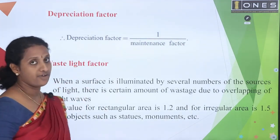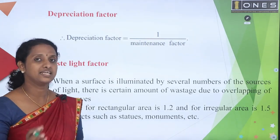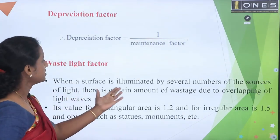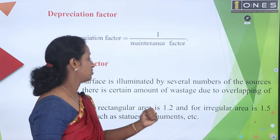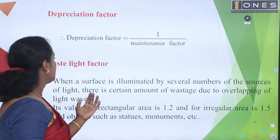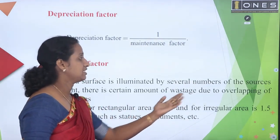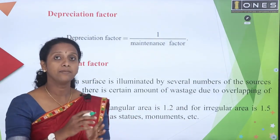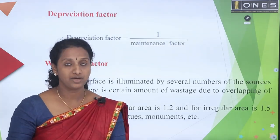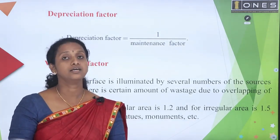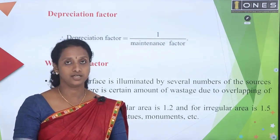At last, waste light factor. When a surface is illuminated by several number of sources, there is a certain amount of wastage — overlapping light. That is the waste light factor.